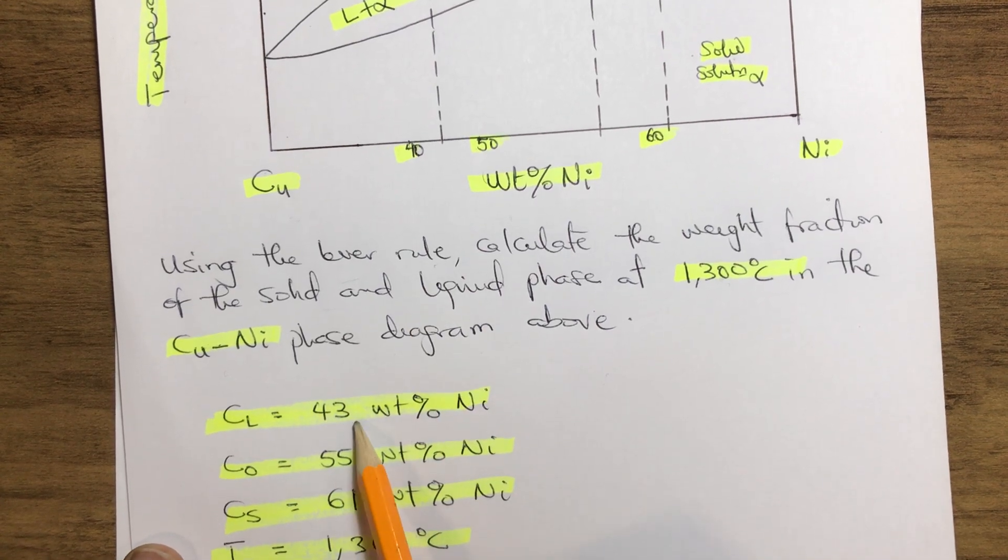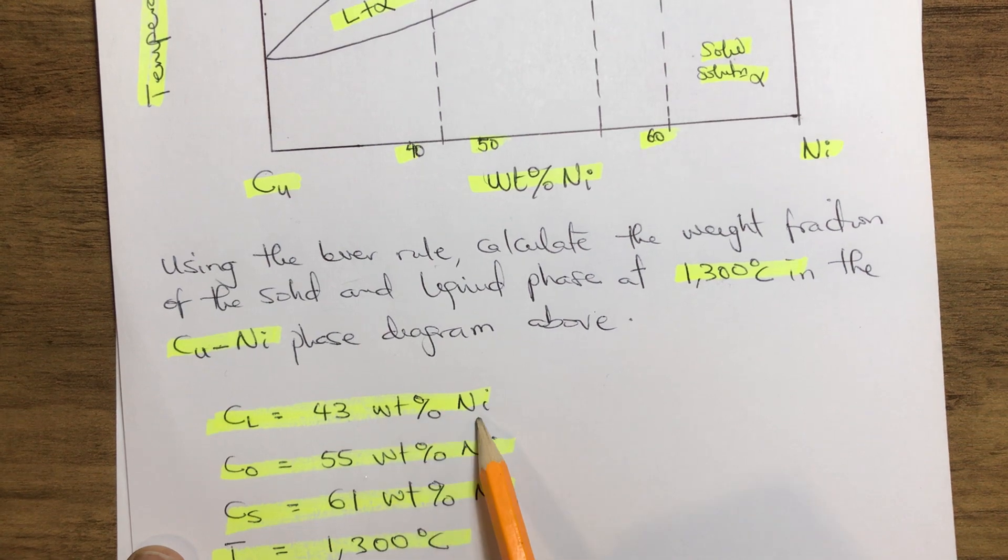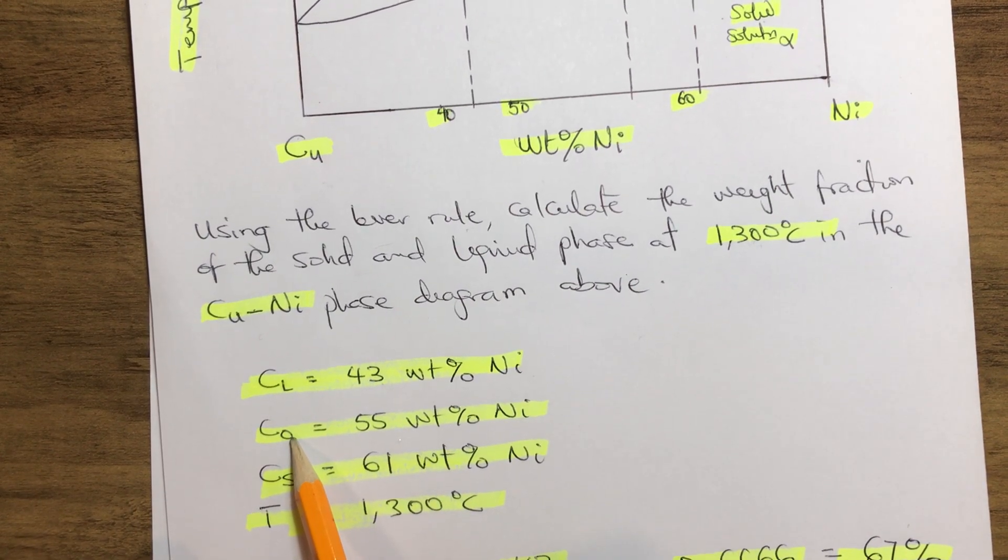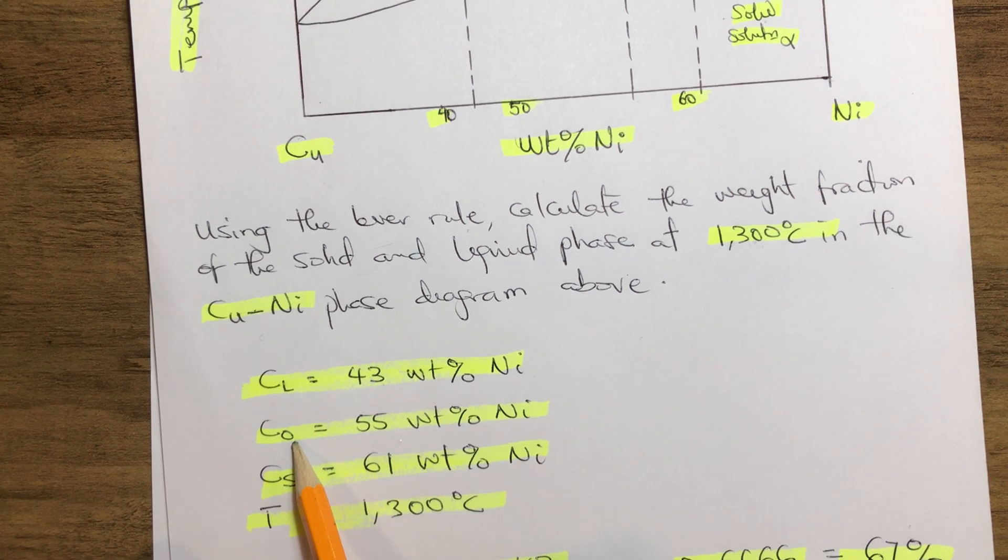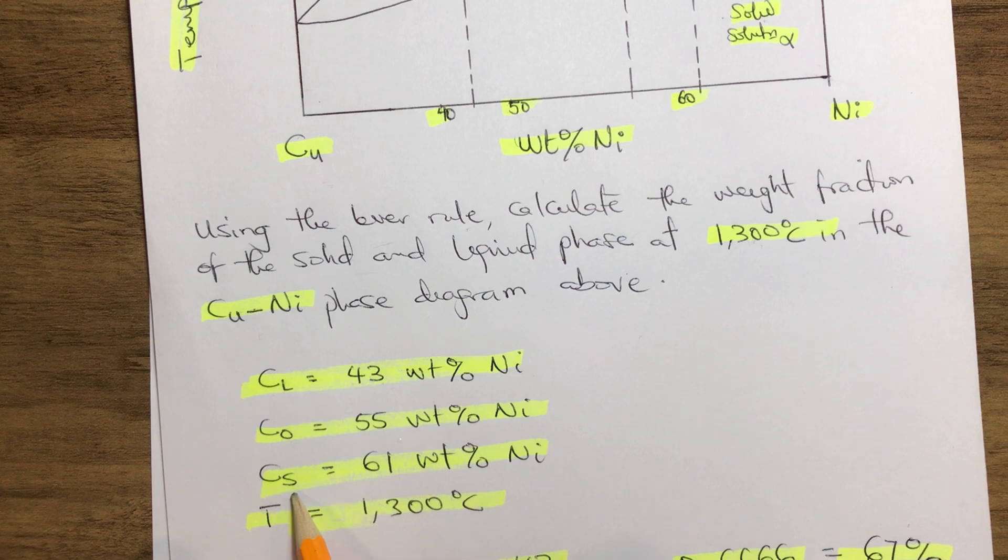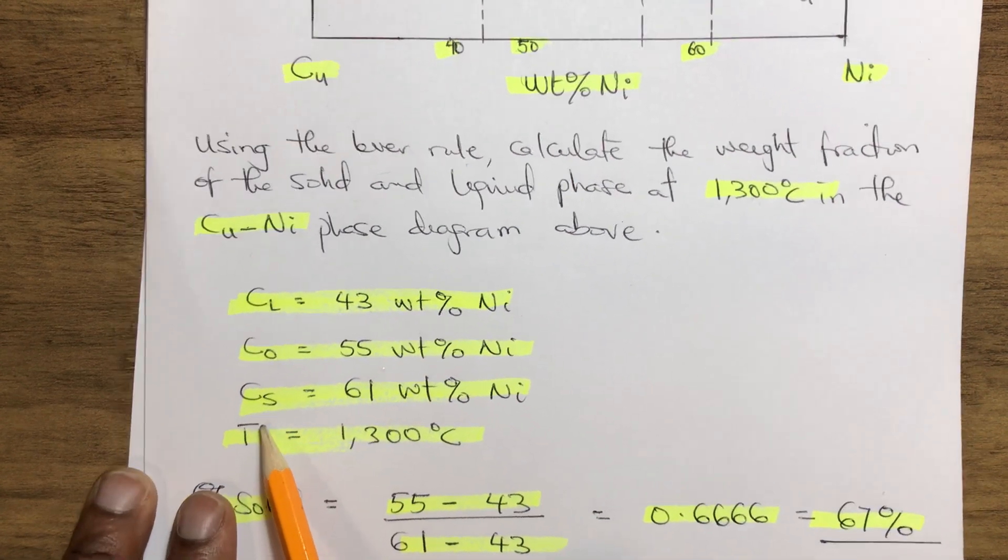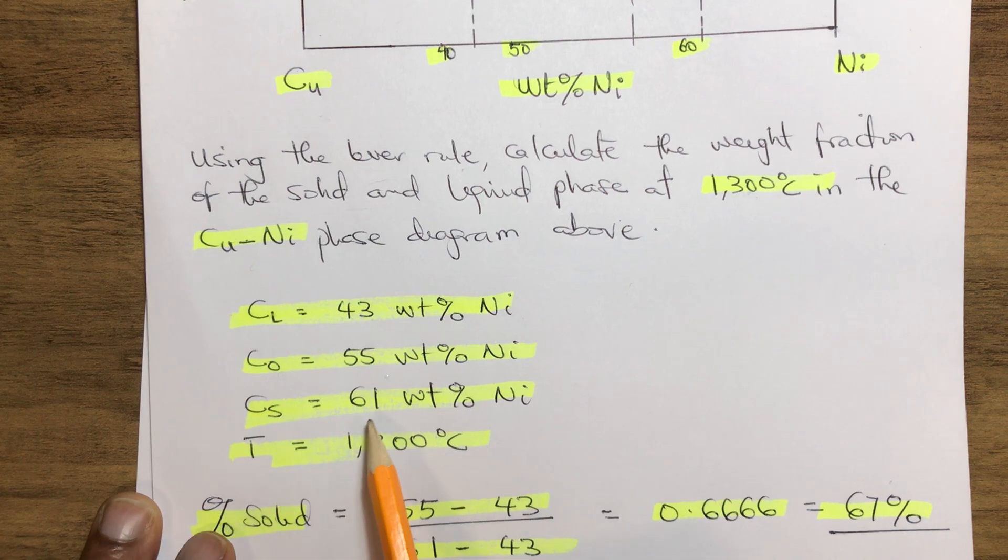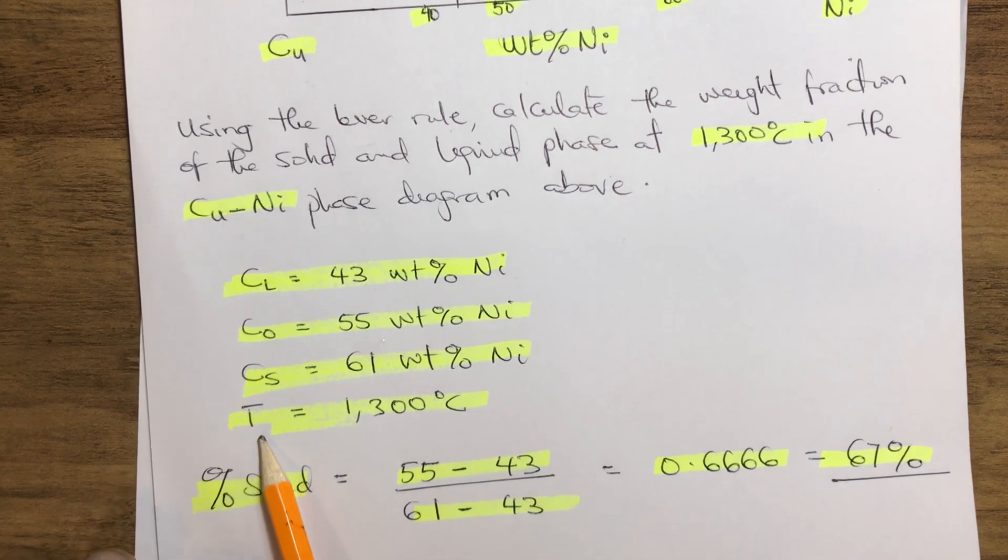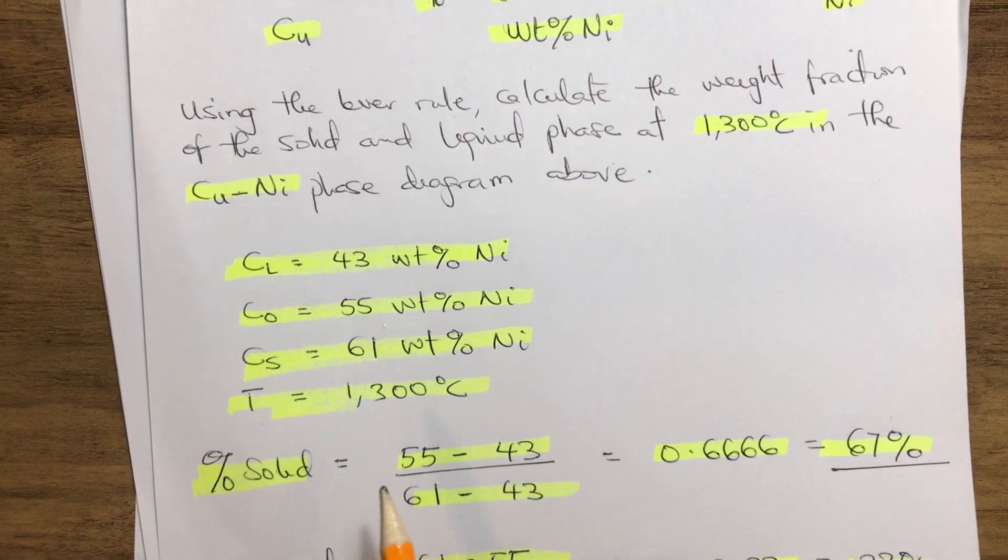CL = 43 weight percent Ni from our graph. We have our copper Co = 55 weight percent Ni. We have our copper at the solid = 61 weight percent Ni, and we have a temperature of 1300°C.